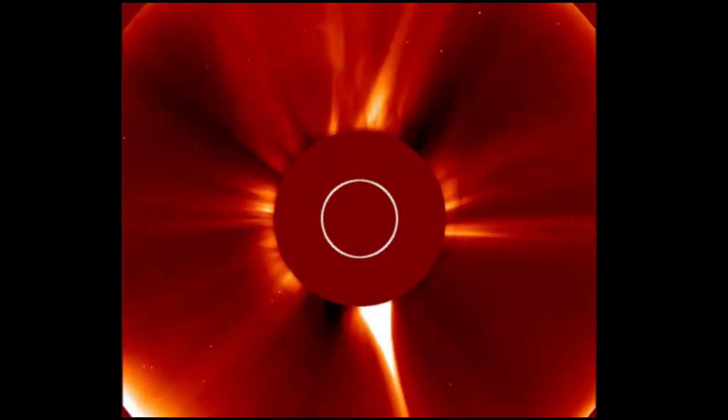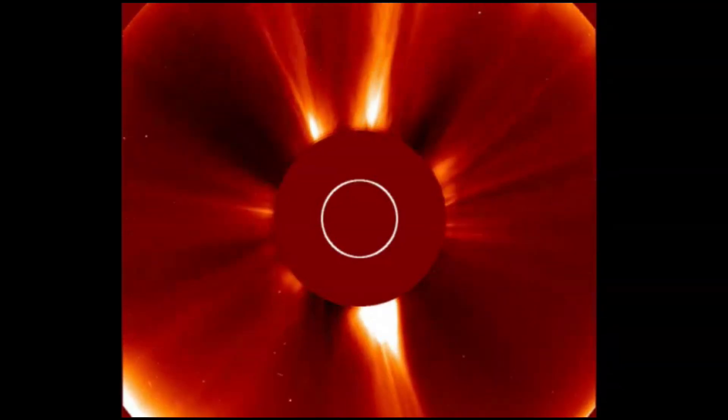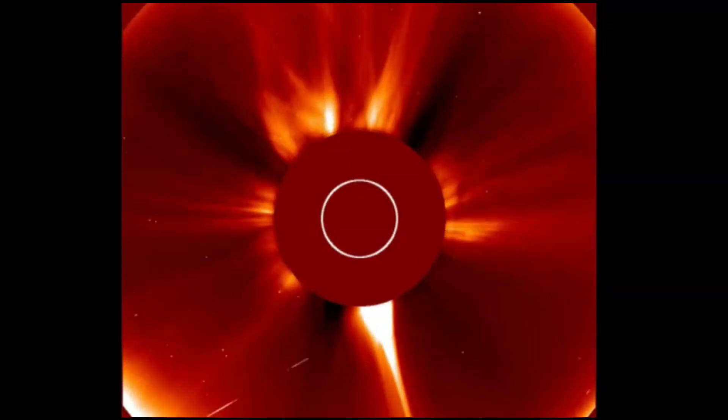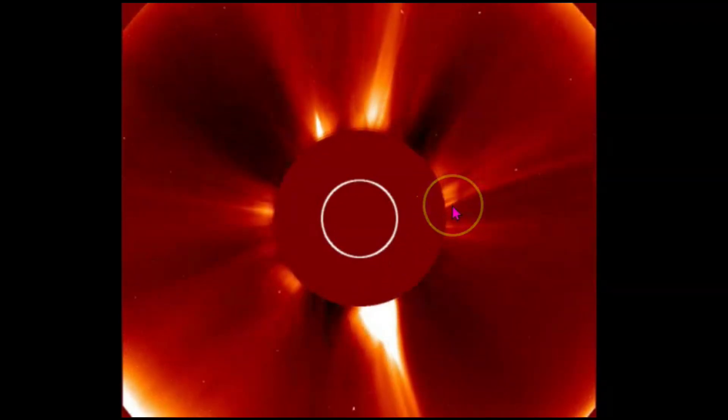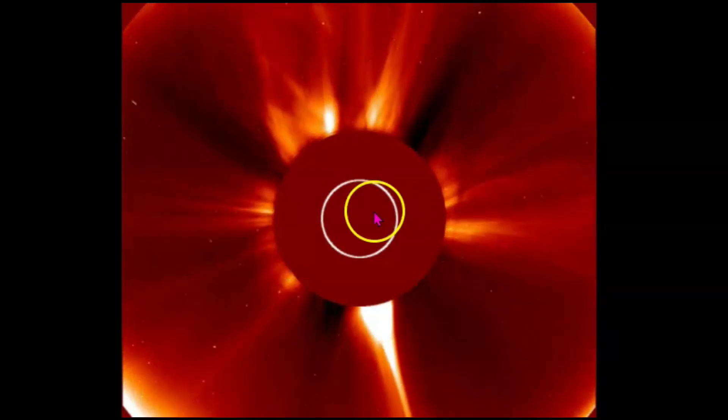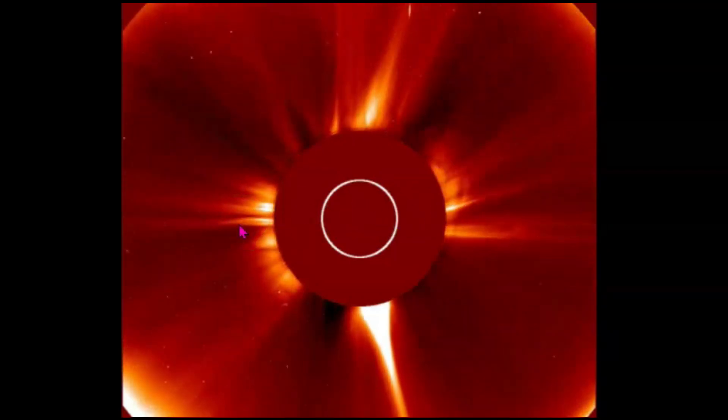Now what's interesting about the sun, it's opposite east and west as it is here on earth. The west is over here on the right hand side of the sun where east is on the left side of the sun.